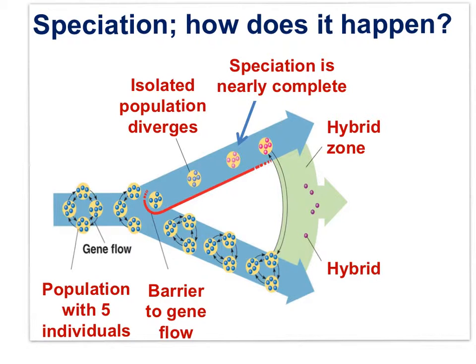Now let's examine the process of speciation more closely. When the allele frequencies change to a large enough extent, new species arise, as can be seen in the change in color. When a population splits into two, becoming reproductively isolated with some barrier that prevents gene flow — represented by the red line — the two populations can no longer exchange genes. There is a barrier to the exchange of genes.